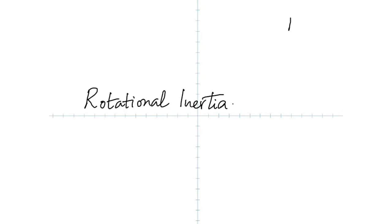It also depends on the distribution of mass. In the bigger one, isn't the mass distributed further away from the axis? Rotational inertia depends on three things: number one, the total mass; number two, the distribution of the mass; and number three, the position of the axis.